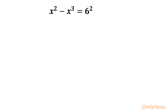Welcome to Infigyan, my dear friends. Today in this video we are going to take up one very interesting Olympiad problem. It is x squared minus x cubed equals 6 squared. This equation is a cubic equation and we have to find out all three solutions — how many are real and how many are complex. I will solve this question in two different easy ways. Let me begin with method number one: using algebraic identities and factorization.